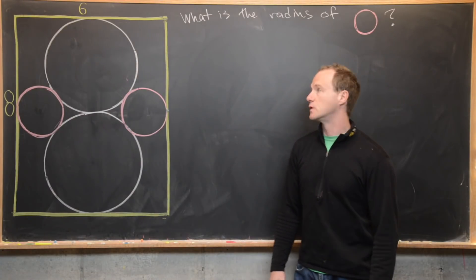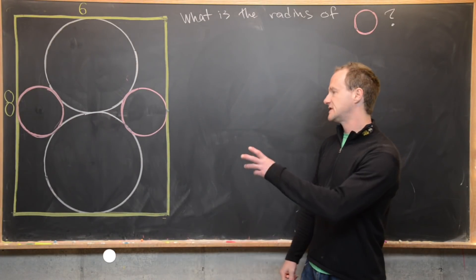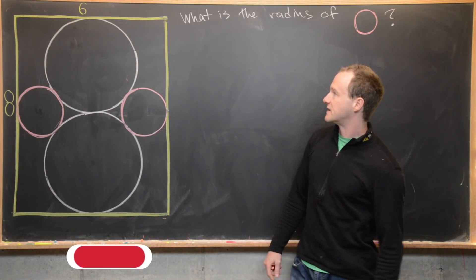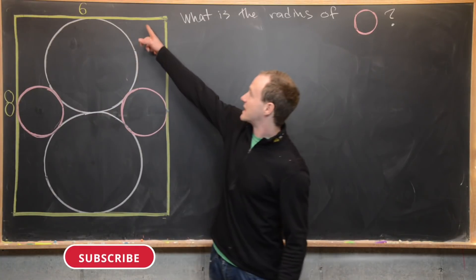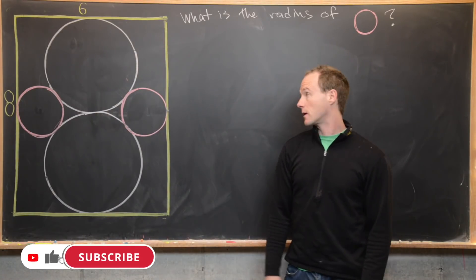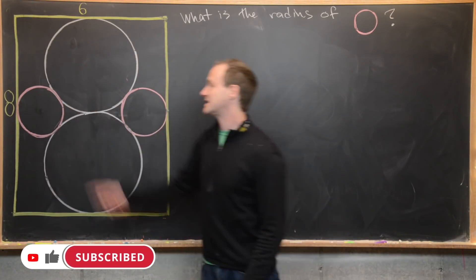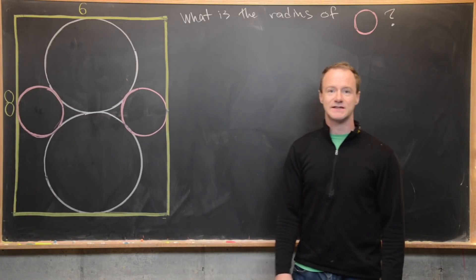Here we're going to look at a nice quick geometry problem. We've got a rectangle with a side length of 6 up here and a height of 8.